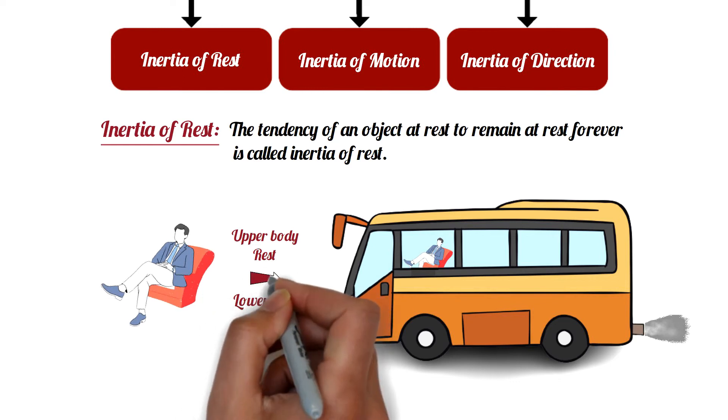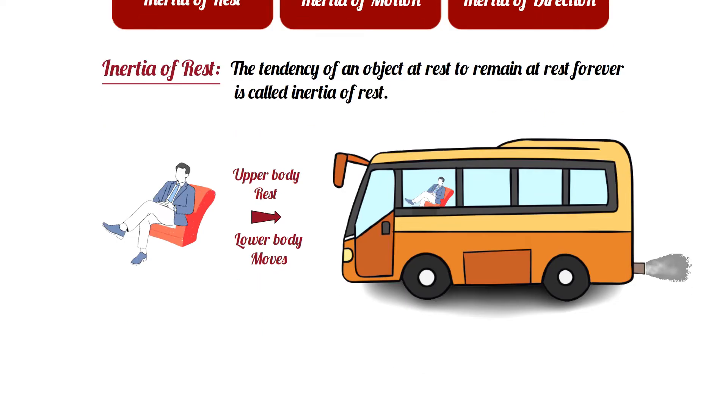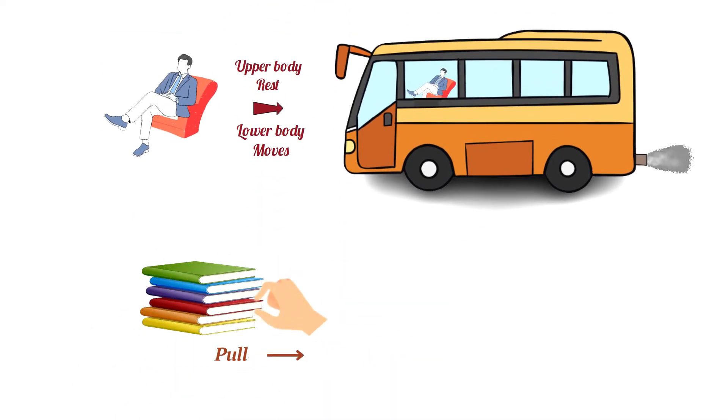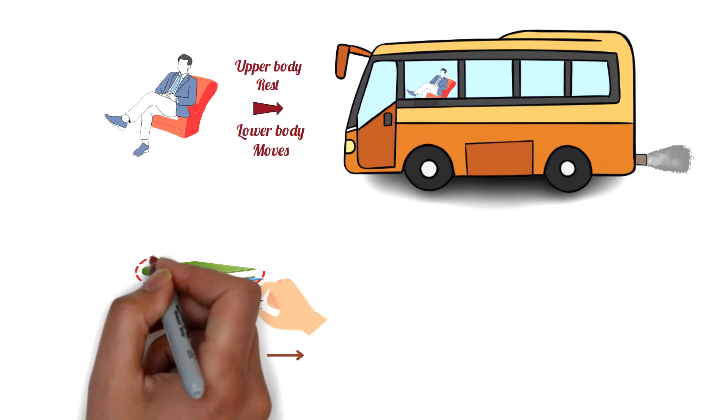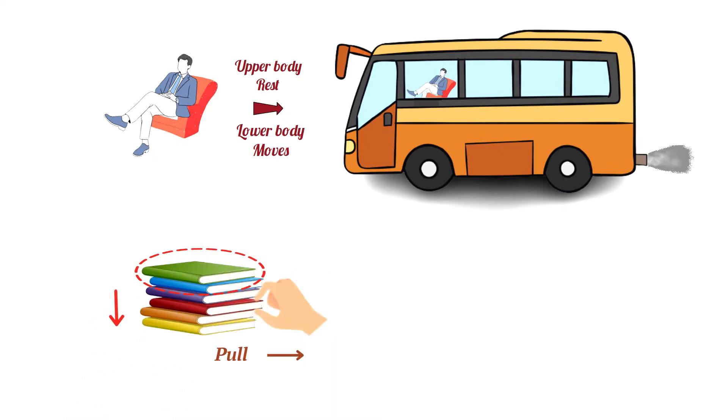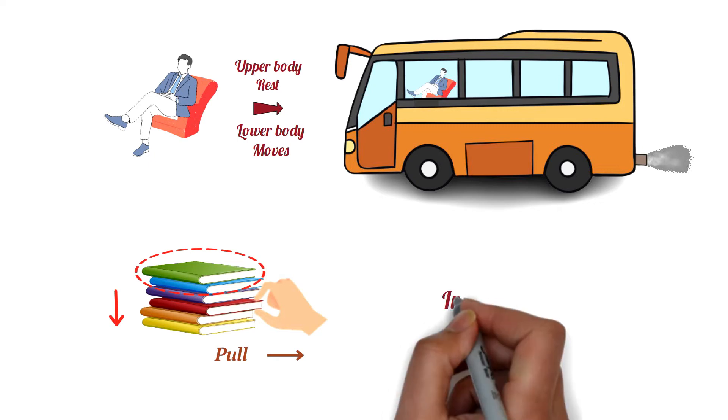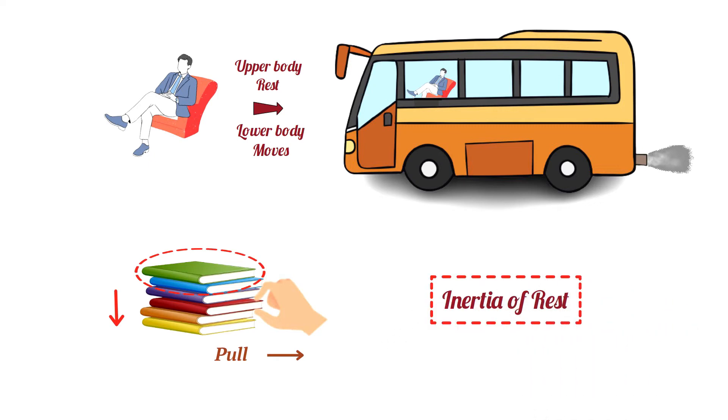A similar case happens when a book is quickly pulled from the middle of a book arranged from the bottom to top. The uppermost books come down, but the column of the book does not break. This also happens for the inertia of rest.